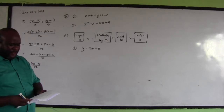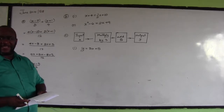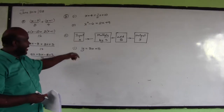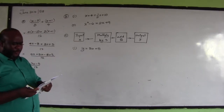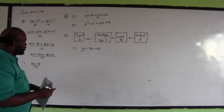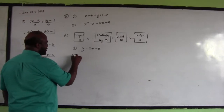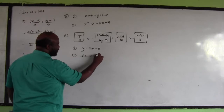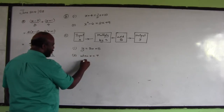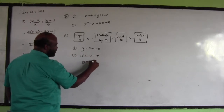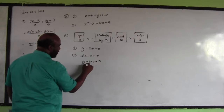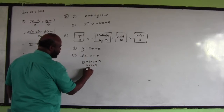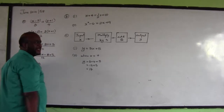Part C(ii): if the number 4 is the input, what would be the output? So when x is equal to 4, y would be 3 times 4 plus 5, which is 12 plus 5. The output y would be 17.